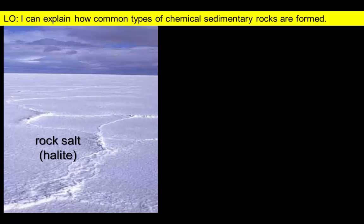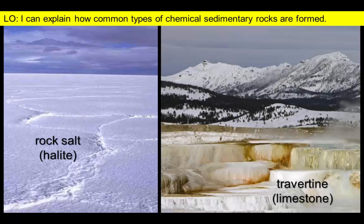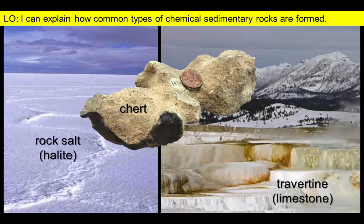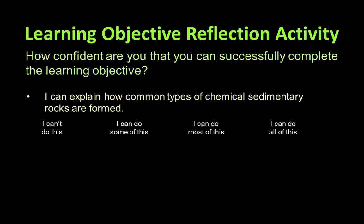So to summarize, chemical sedimentary rocks are typically formed as a result of evaporation or precipitation from mineral-rich waters.